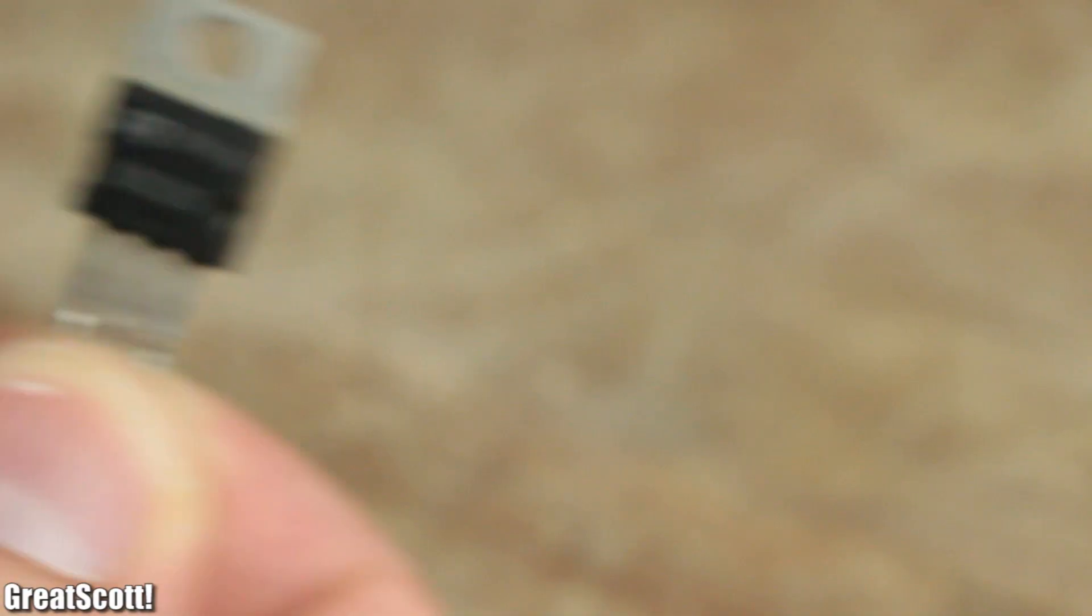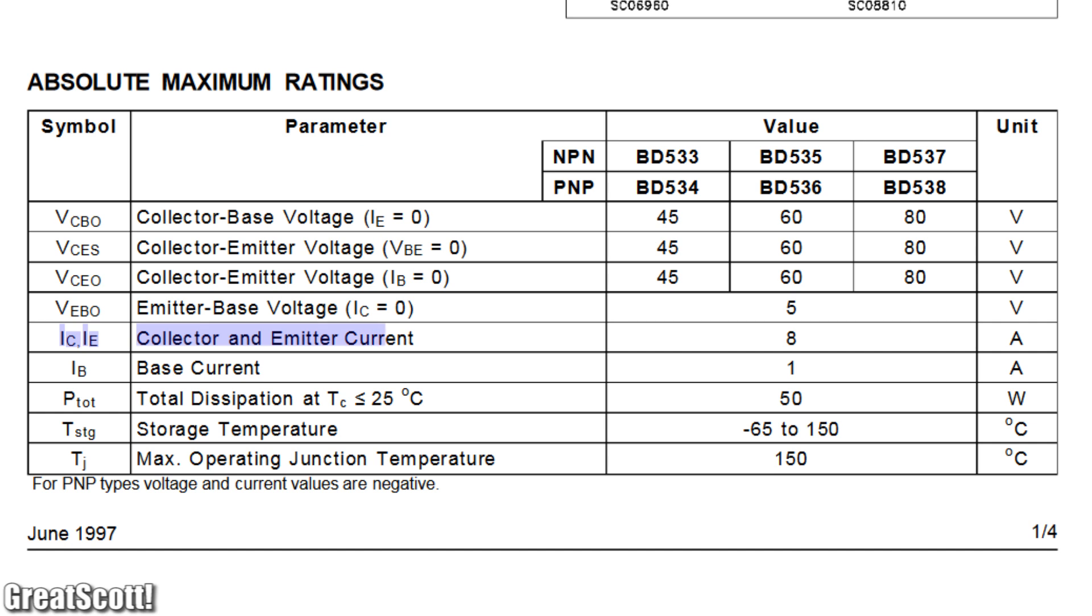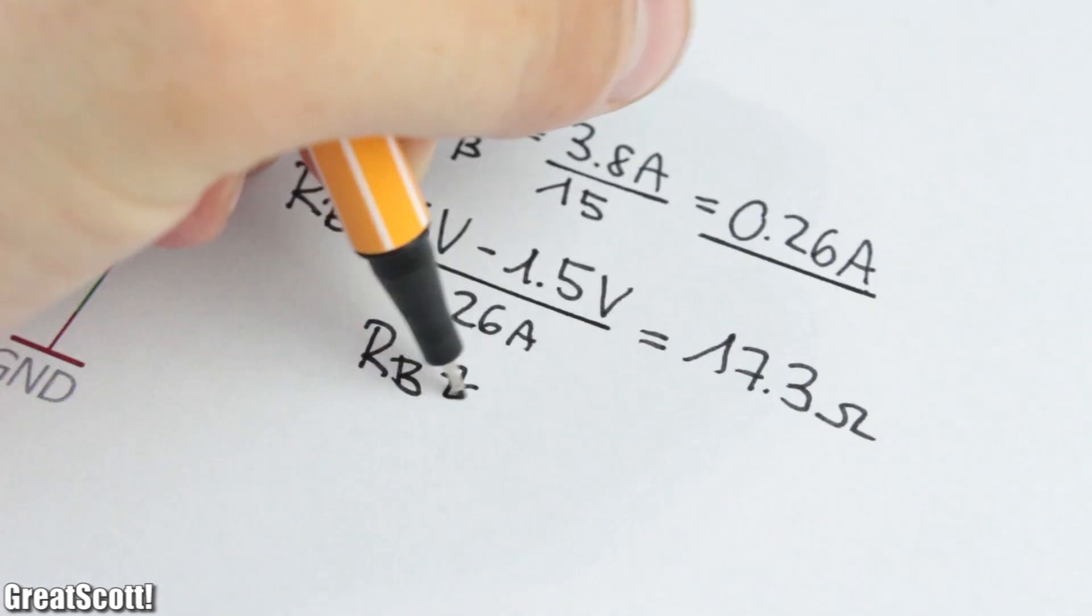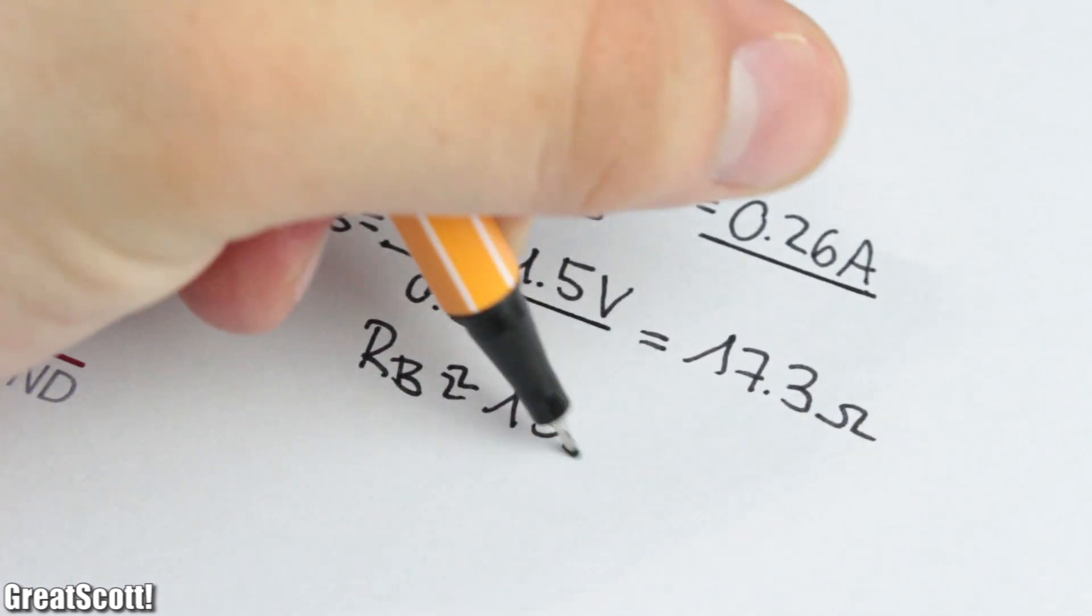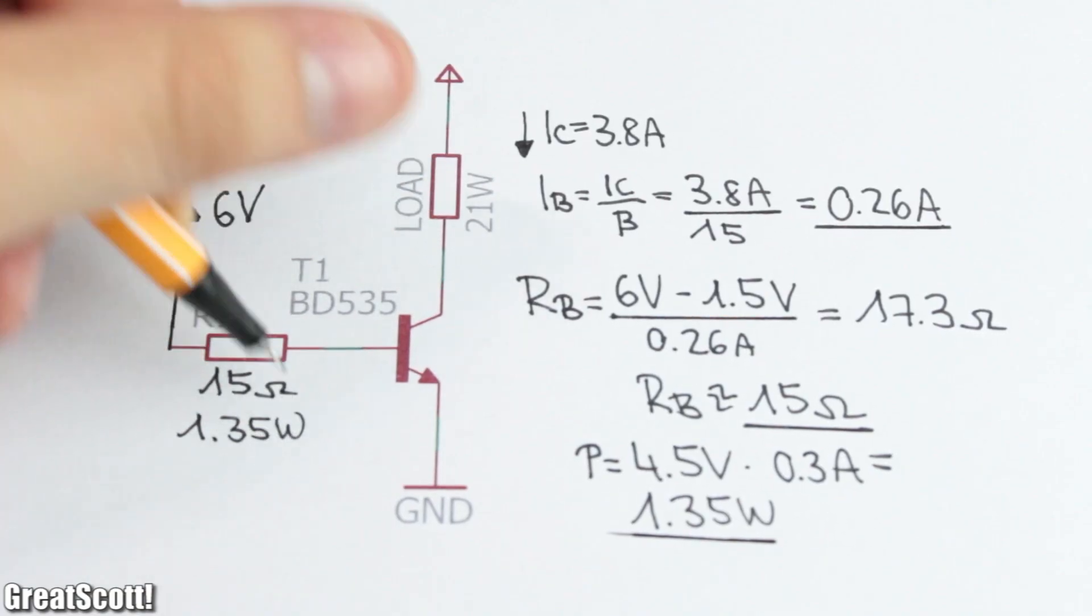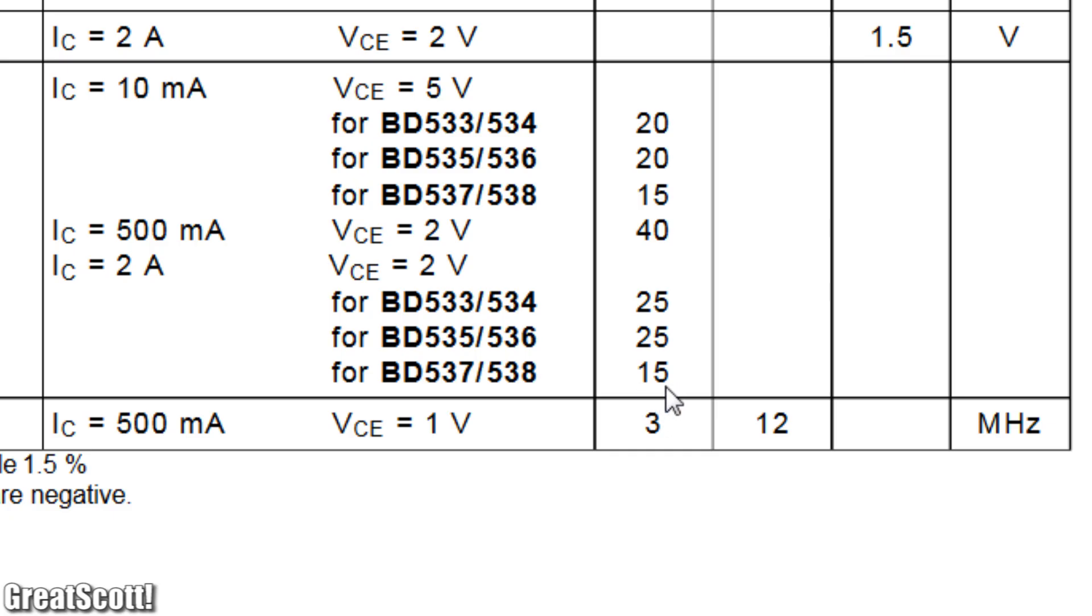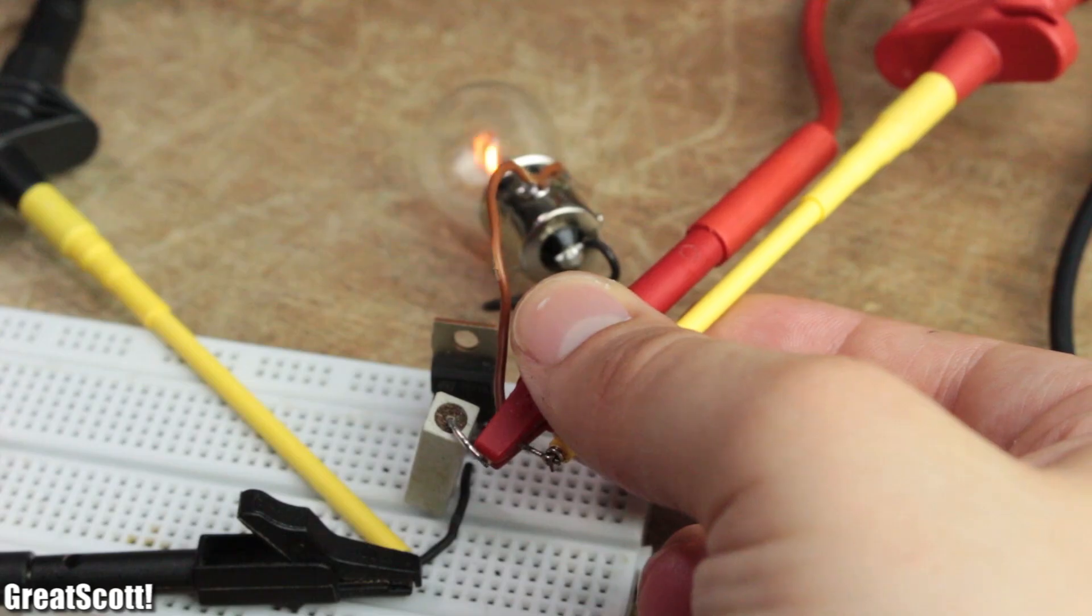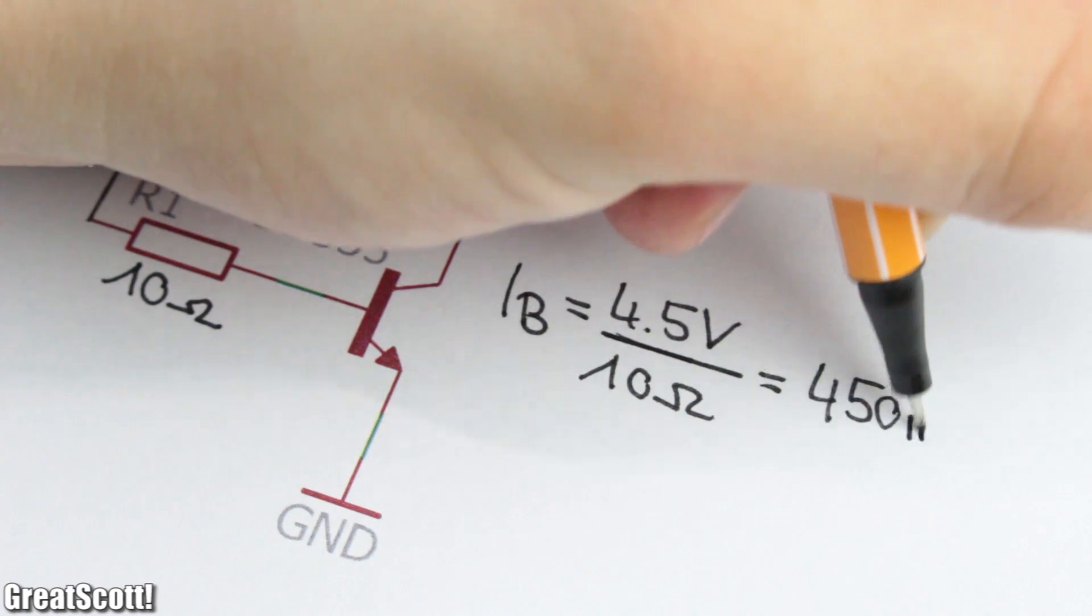We need something beefier, like this BD535 with a maximum collector current of 8 amps. The calculations were pretty much the same as before, but it is noticeable that even by calculating with the lowest beta value mentioned in the datasheet, I did not reach the collector-emitter saturation voltage.